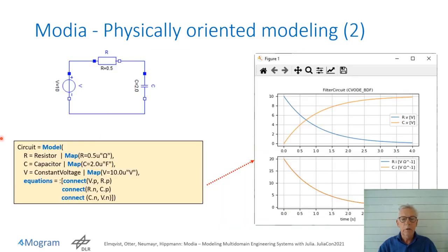An electrical circuit is created by instantiating models, such as a resistor, and merging with a map. That is an instantiation, a new instance called R based on the resistor model, and merging with a map to set the parameters. Such components are then connected by referring to the component pins in a connect statement. For example, connect V dot P to R dot P.